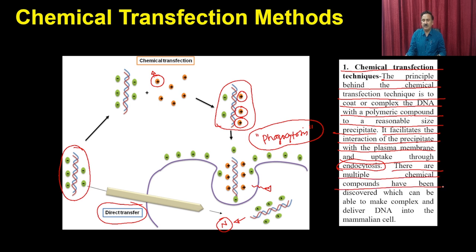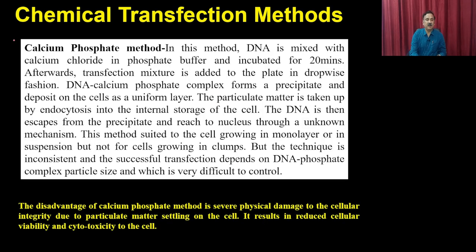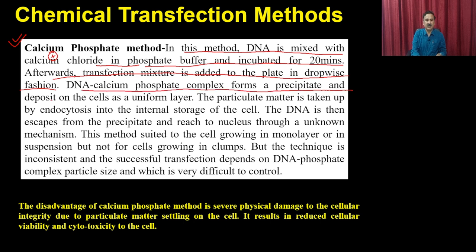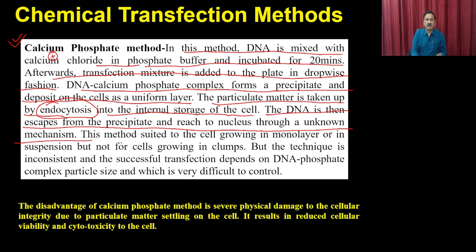The principle behind the chemical transfection technique is to coat or complex the DNA with a polymeric compound to form a reasonably sized precipitate. It facilitates the interaction of the precipitate with the plasma membrane and uptake through the process of endocytosis or phagocytosis. One such chemical is the calcium phosphate method, where DNA is mixed with calcium chloride in a phosphate buffer and incubated for 20 minutes, then the transfection mixture is added to the plate in a dropwise fashion.